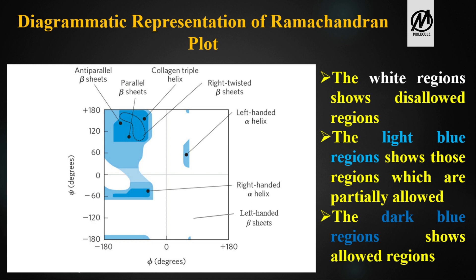The left quadrants correspond to L-type amino acids and the right quadrants to D-type amino acids. The upper left quadrant shows right-twisted beta sheets; the lower left quadrant shows the right-handed alpha helix; the upper right quadrant shows the left-handed alpha helix; and the lower right quadrant shows left-handed beta sheets.